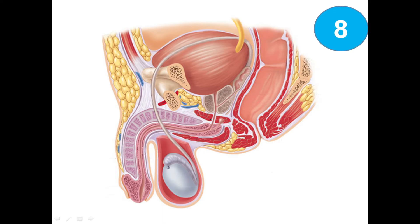We can see here the central section of the male reproductive system. First of all, the testis. Around the testis we are having the scrotum. This worm-like structure called the epididymis. This duct is known as the ductus deferens or vas deferens. Now we identify the three accessory glands of the male: seminal vesicle, prostate, and this small one is the bulbourethral gland also known as Cowper's gland.